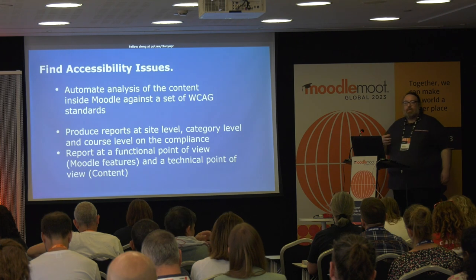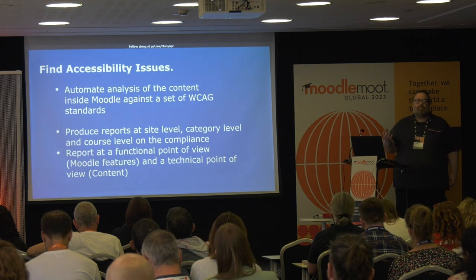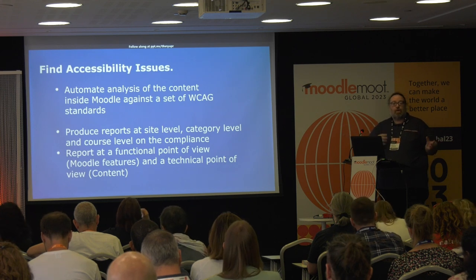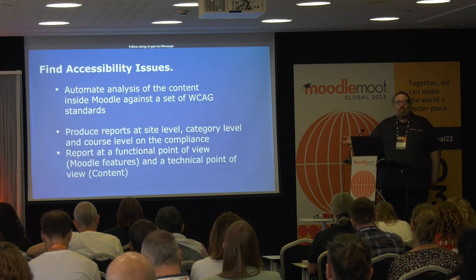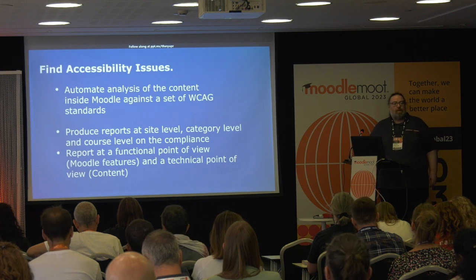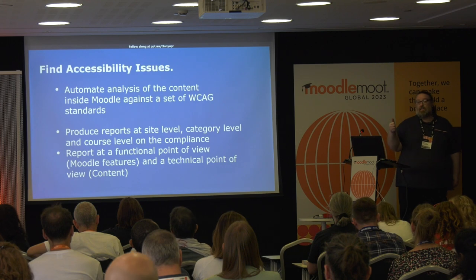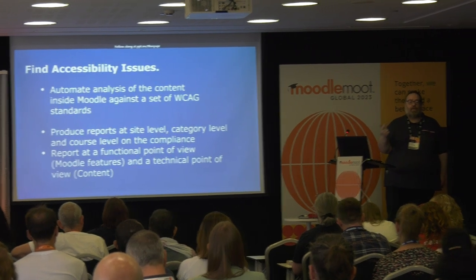So the first aspect is around finding. We have a mantra of find, fix, future proof, because accessibility is a journey. So when you find a problem, you want to fix it, and then you want to stop it happening into the future. And that requires three things: firstly, technology; secondly, a culture of accessibility first; but it also requires capacity building, staff skills, digital skills and understanding of why. And that is paramount — it's one of the foundational concepts of how we approach it.